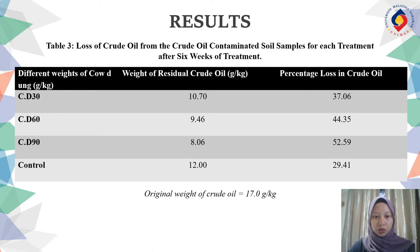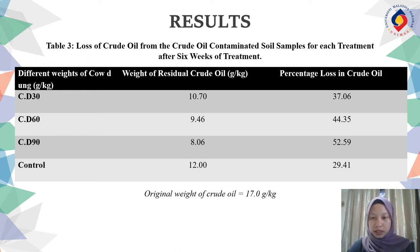Table 3 showed the result of weight loss of crude oil due to microbial attack. The application of 90 grams of cow dung showed the highest removal of crude oil from the sample with 52.59%, followed by 60 grams of cow dung and 30 grams of cow dung with 44.35% and 37.06% respectively. The controls showed the least removal of crude oil with 29.41%.